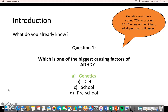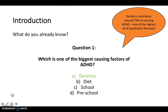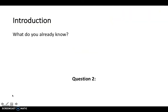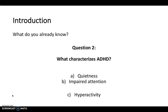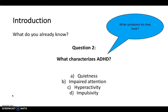Remember in your history taking to always complete a family history, as that is important. Question two: what characterizes ADHD — is it A) quietness, B) impaired attention, C) hyperactivity, or D) impulsivity? Have a think about what a child with ADHD might present with in terms of symptoms.